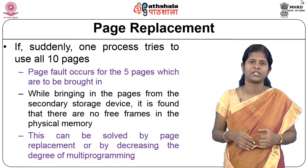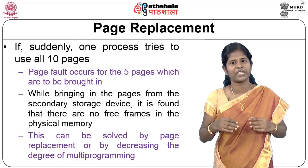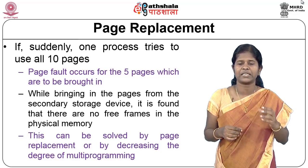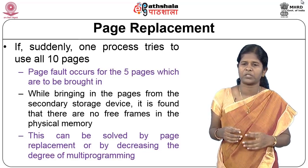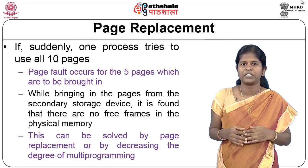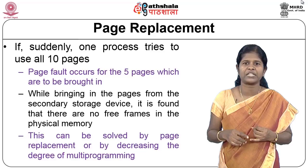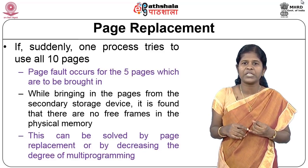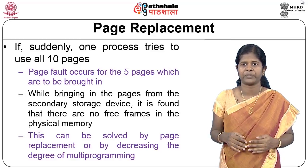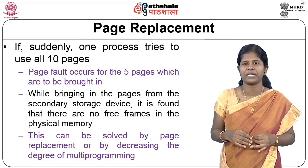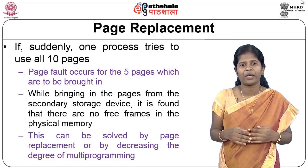One solution is to decrease the degree of multiprogramming: remove some processes from memory to free frames. For example, removing two processes frees 10 pages. The second way is page replacement — when bringing in a needed page, you select a victim frame in physical memory, move it out to secondary storage, and bring in the required page.